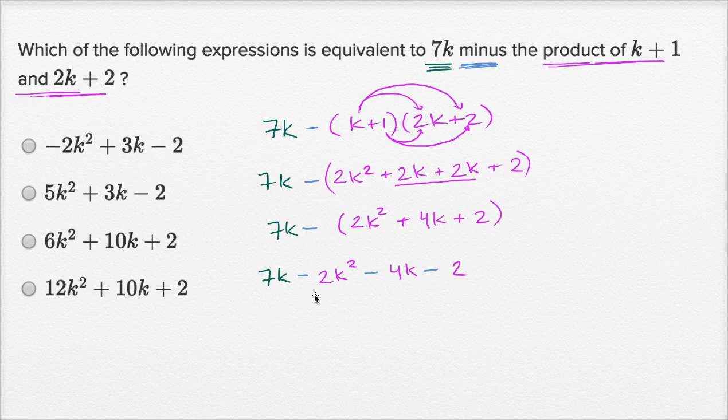And let's see, if we write the highest degree term first, you get negative 2k squared. And actually, immediately when you look at the choices, only one of these starts with negative 2k squared. It has negative 2 as the coefficient on the k squared term. So we already know that's going to be the choice, but let's just confirm it.